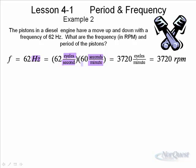When we multiply 62 by 60, we get 3720. The seconds cancel the seconds. And we're left with cycles per minute. And of course, cycles are the same as revolutions per minute.